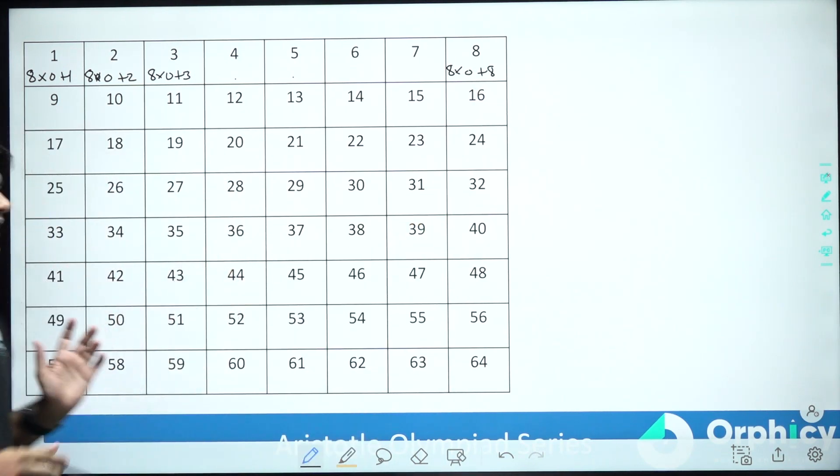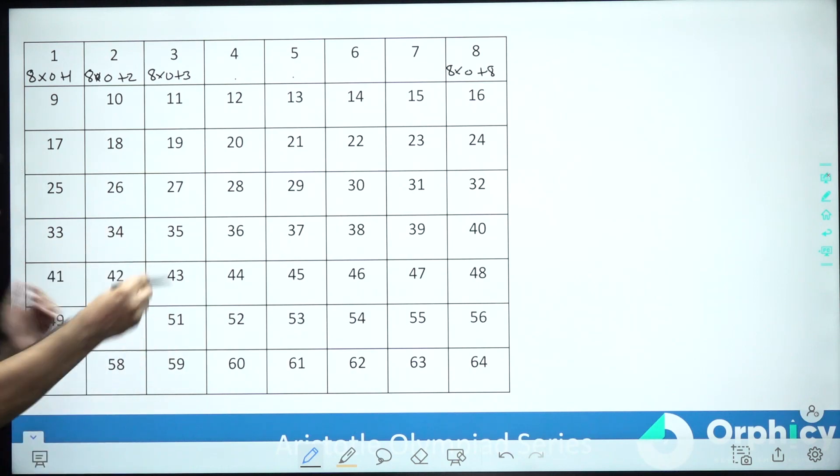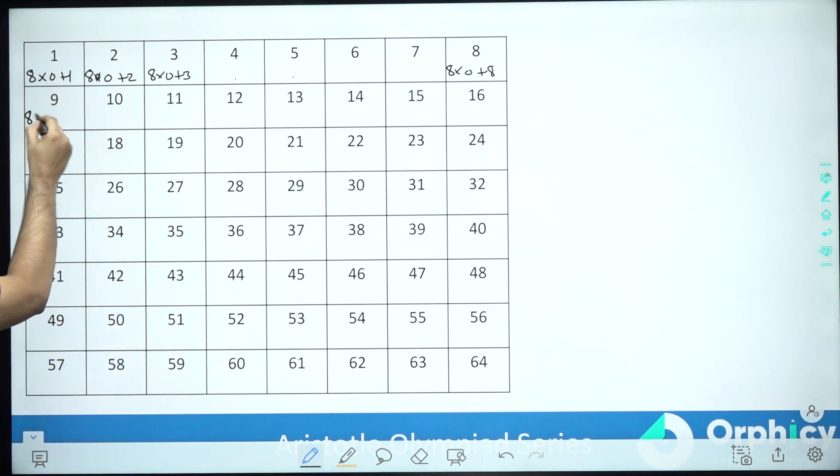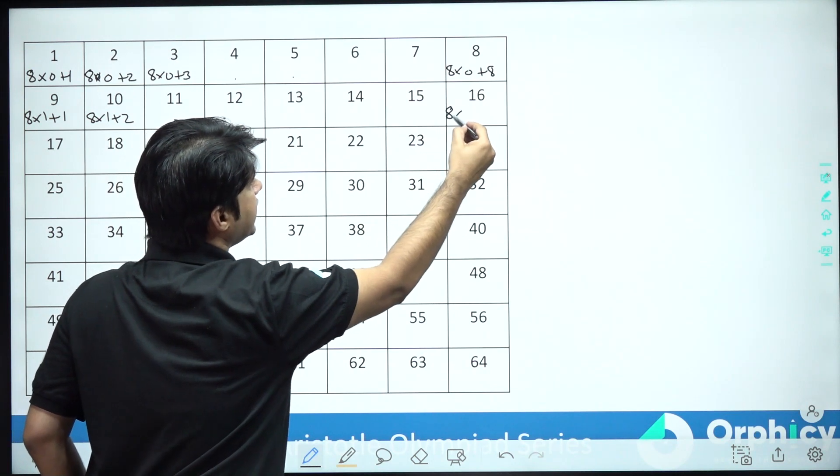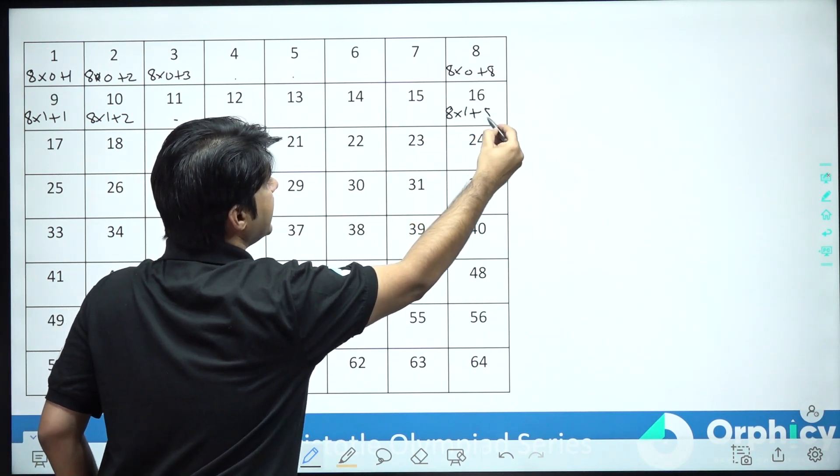Every number I can write as 8 x 1 plus something, so 9 I can write as 8 x 1 plus 1, 10 will become 8 x 1 plus 2 and so on till the last number will become 8 x 1 plus 8.